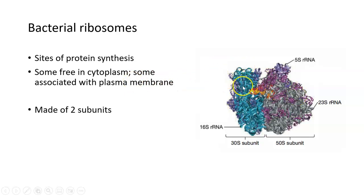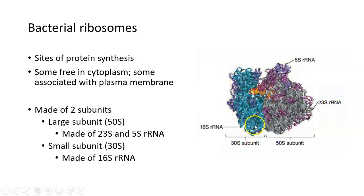All bacterial ribosomes are made up of two subunits or two pieces, which you can see here in teal and gray. The large subunit is on the right in gray. We call the large subunit the 50S subunit. S is a measurement of density, so this has a density of 50. It's made up of two types of rRNA: the 5S rRNA and the 23S rRNA. The small subunit on the left in teal is referred to as the 30S subunit. It's a smaller size and it's made up of 16S ribosomal RNA. So the large subunit is made up of 5S and 23S rRNA, and the small one is made up of 16S rRNA.